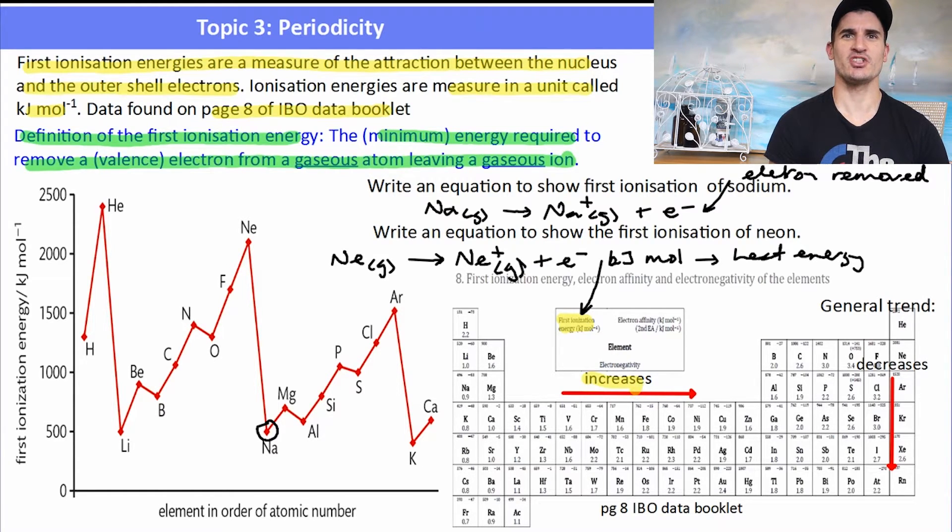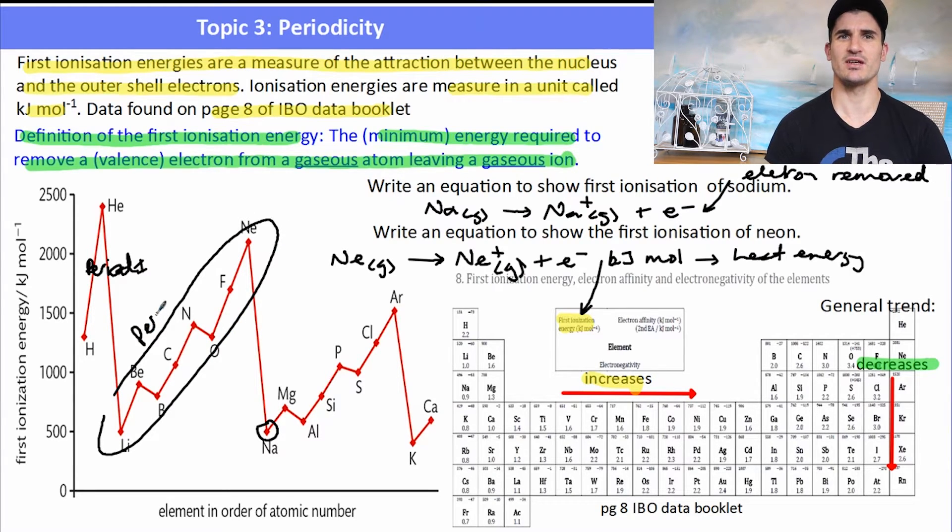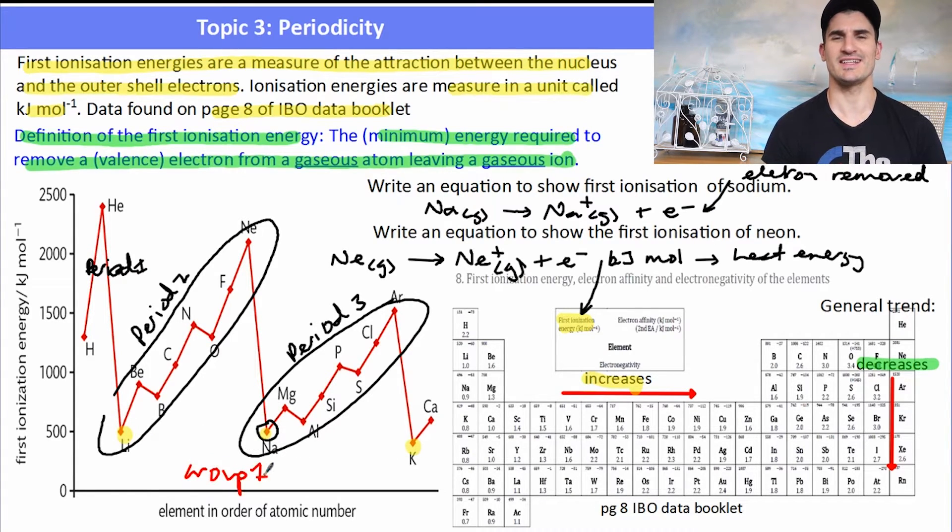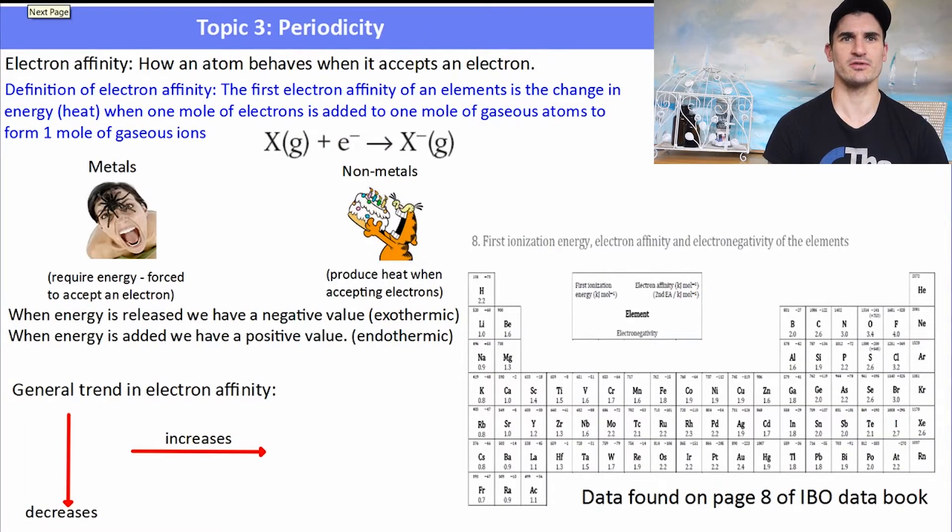The trend for ionization energy, it increases as we go across the periodic table and decreases as we go down. Using the graph, we can kind of see that. If you have a look at period 1, hydrogen to helium, that shows the general trend. Period 2, we can see quite an increase as we go from lithium to neon. And from period 3, you can also see that as we go from sodium to argon, it gets much harder to remove electrons. If we're looking at trends in a group, here you can see lithium, sodium, and potassium. And even though it's slight, it does decrease as we go down one of the groups. And that's true for all of the differences.